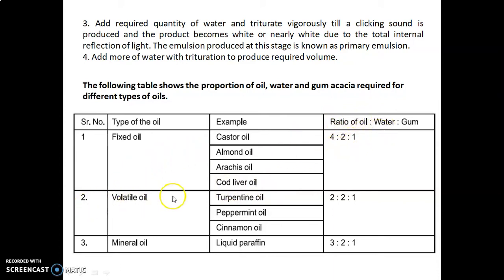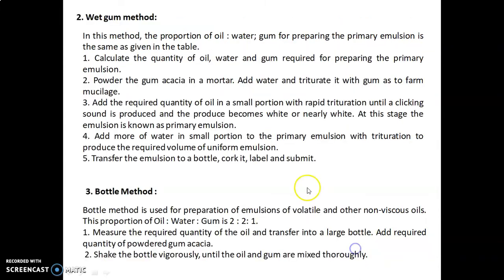For volatile oils such as turpentine oil, peppermint oil, and cinnamon oil, the ratio of oil to water to gum is 2:2:1. For mineral oil (liquid paraffin), the ratio of oil to water to gum is 3:2:1.